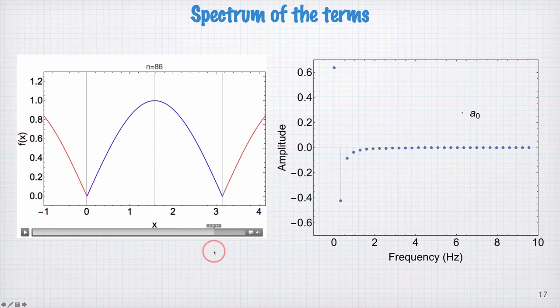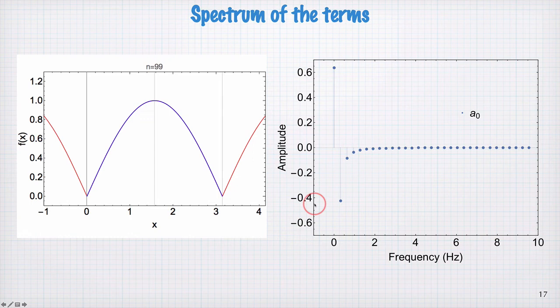By the time we get to 100, it's almost indistinguishable. If we look at the spectrum of the terms, then we can see this behavior is reflected in this spectrum.